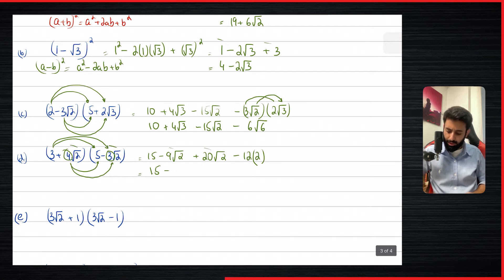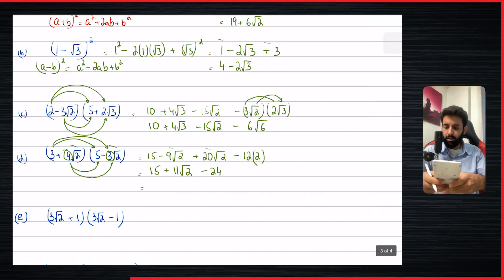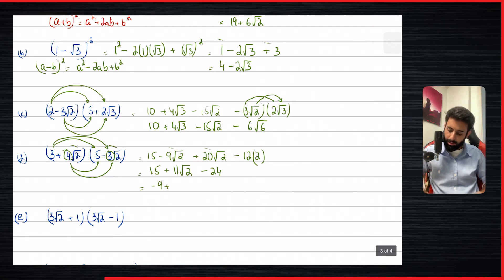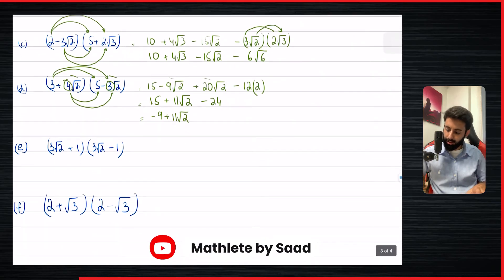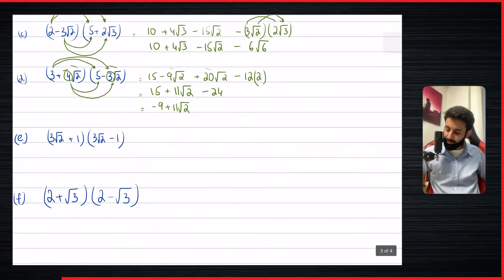We can further simplify: -9 + 20 = 11, so that gives 11√2. And 12 × 2 = 24, so that term is -24. Then 15 - 24 = -9. The final answer is -9 + 11√2.